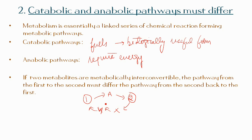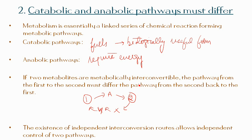Consequently, the pathways must differ in one of their reaction steps. The existence of independent interconversion routes allows independent control of the two processes.